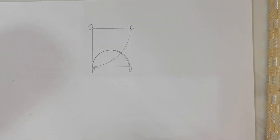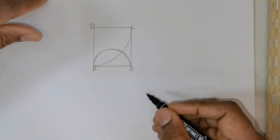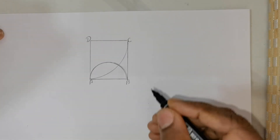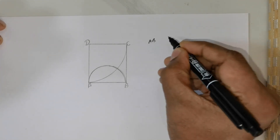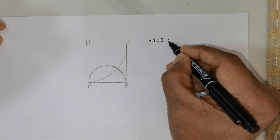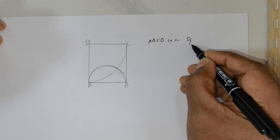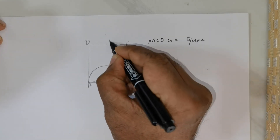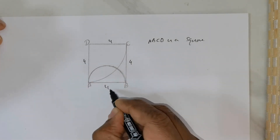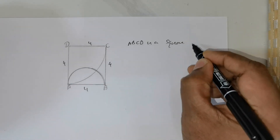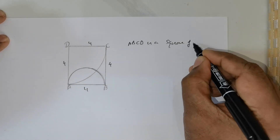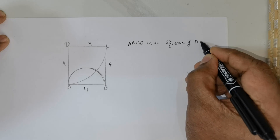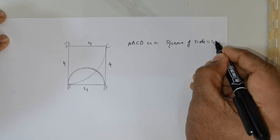Foremost, we will analyze what is exactly given here. We have been given a square — let me write that down. ABCD is a square and each side is given to be 4 units. Side equal to 4 units.